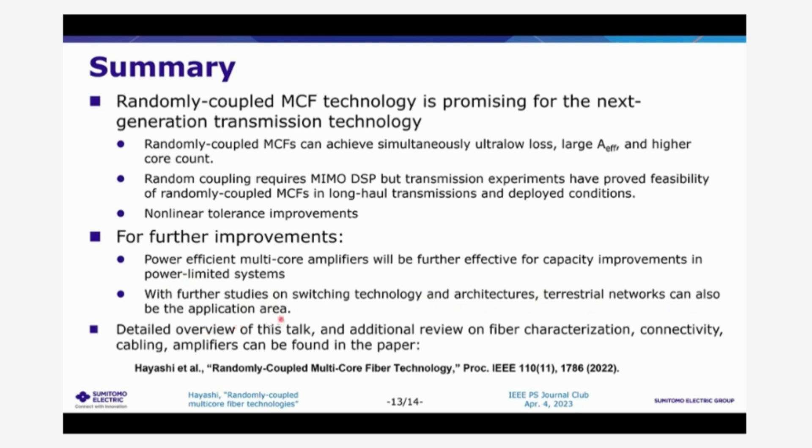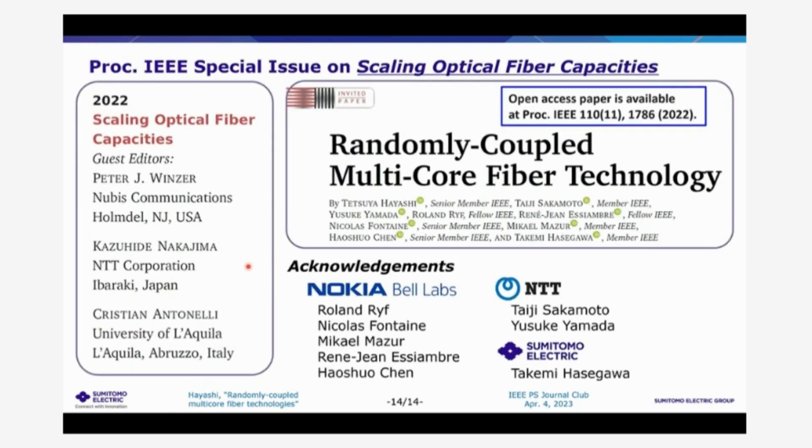And more details of this talk, more detailed overview of this talk with additional review of the fiber characterization, connectivity, cabling, amplifier can be found in our more recent review paper in the proceedings of the IEEE published in the last year. So you can find also this paper about the more details of the randomly coupled multi-core fibers. Thank you very much.